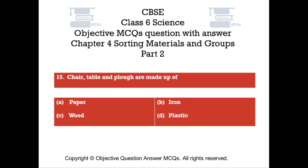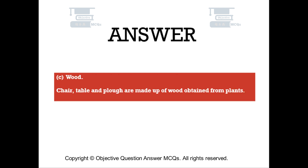Question number 15. Chair, table, and plow are made up of — Option A: Paper. Option B: Iron. Option C: Wood. Option D: Plastic. The right answer is Option C — Wood. Chair, table, and plow are made up of wood obtained from plants.